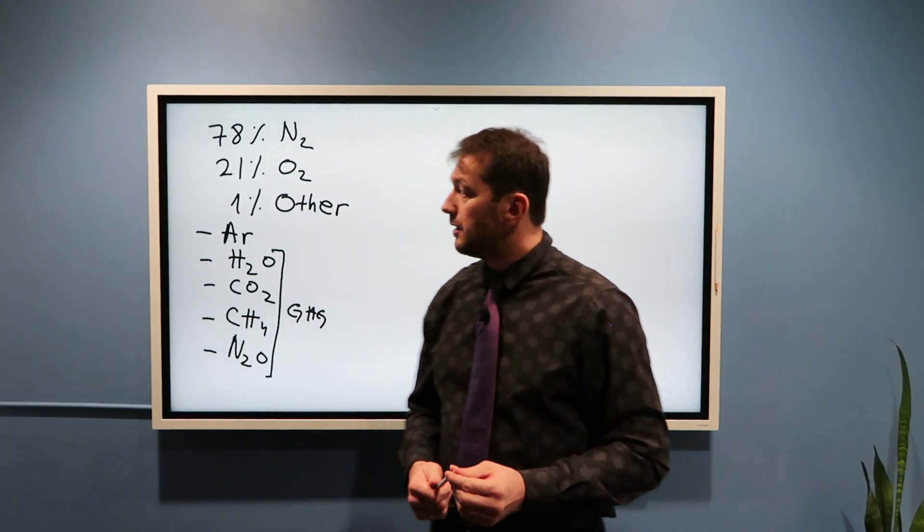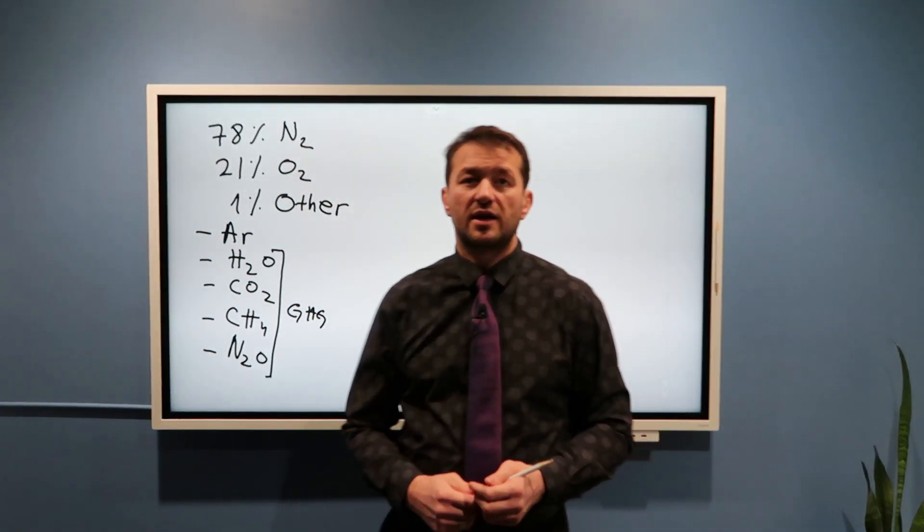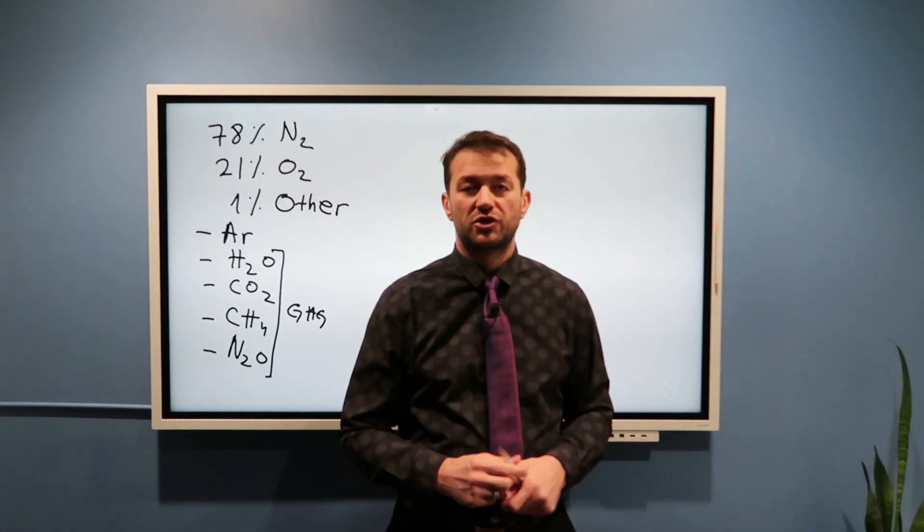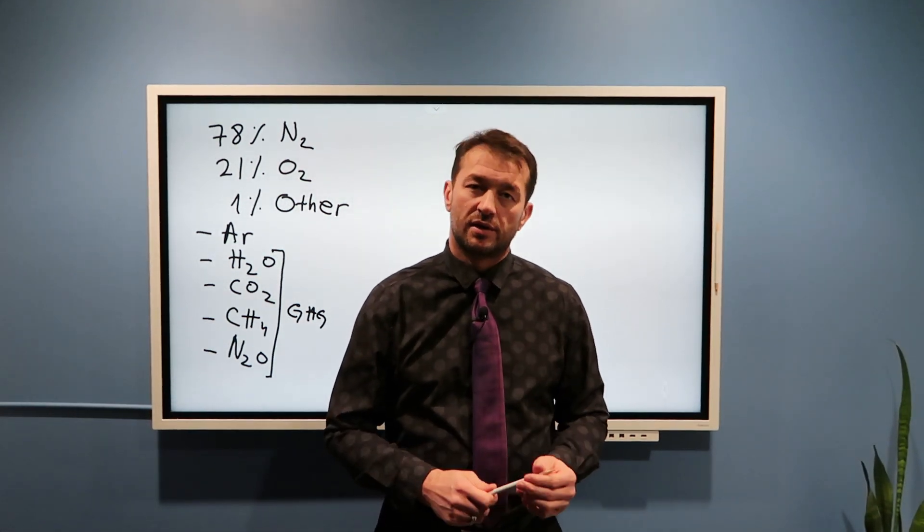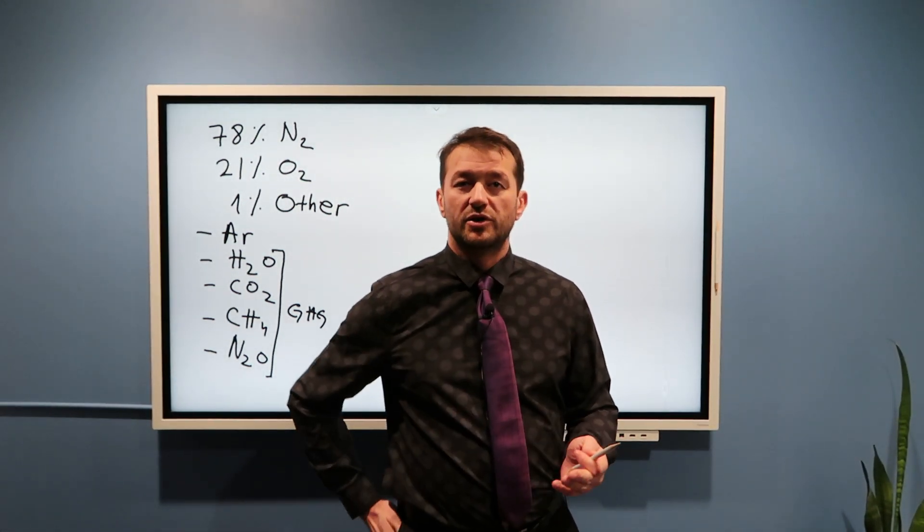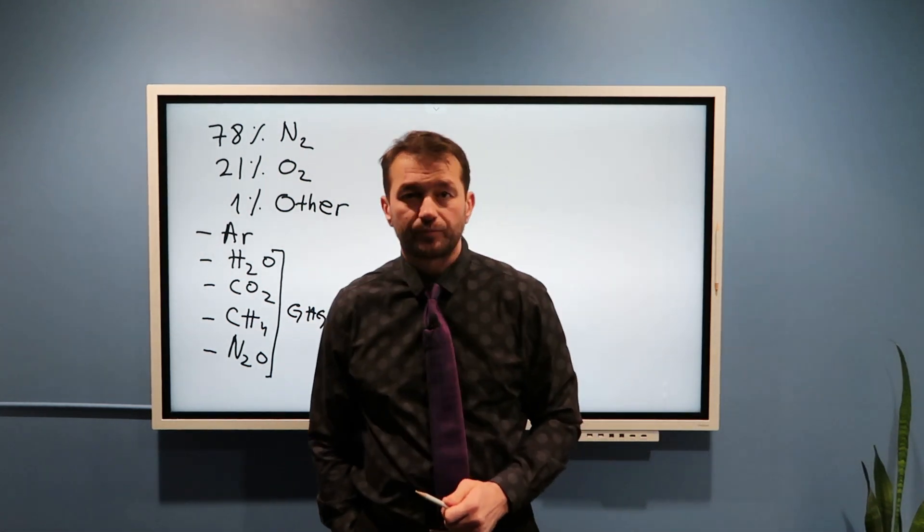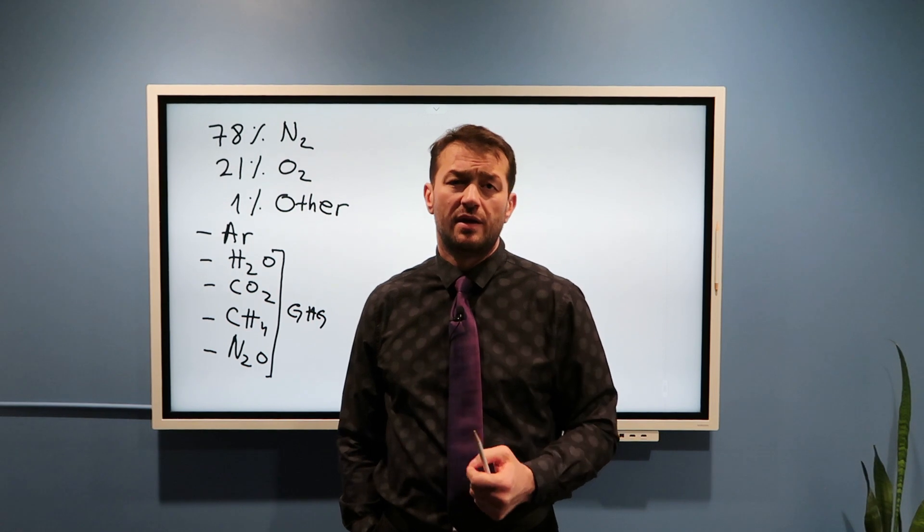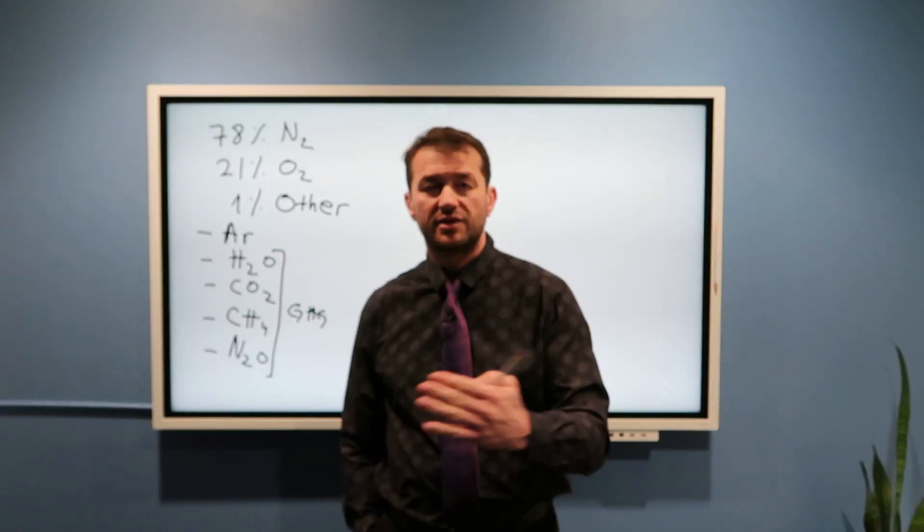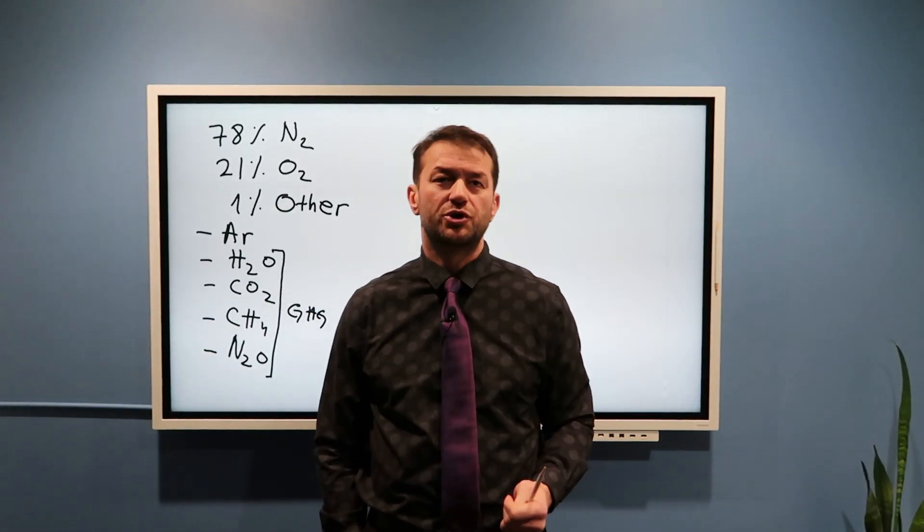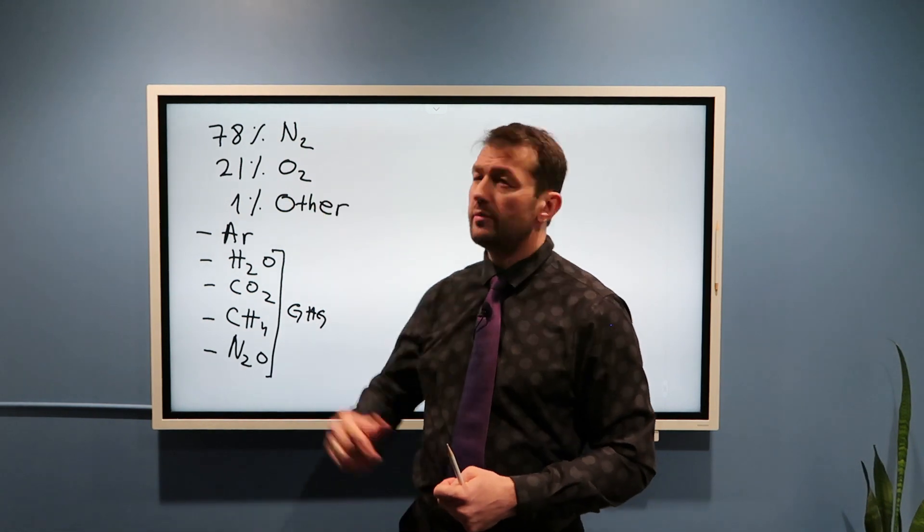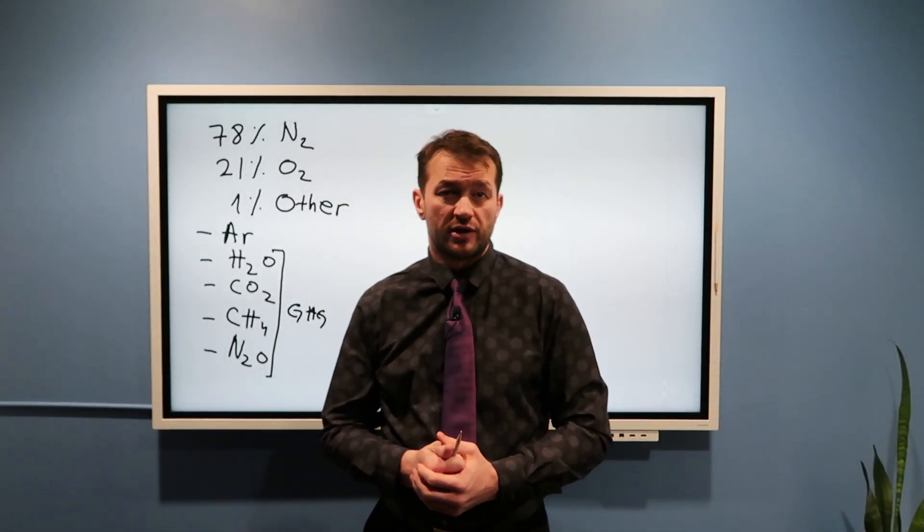The main source of N2 in the atmosphere are certain combustion processes and certain decaying of animals and plants. The main sink of N2 in the atmosphere are certain nitrogen-fixing bacteria in plants, in soil and ocean, and also a little bit of it gets destroyed in lightning strikes.